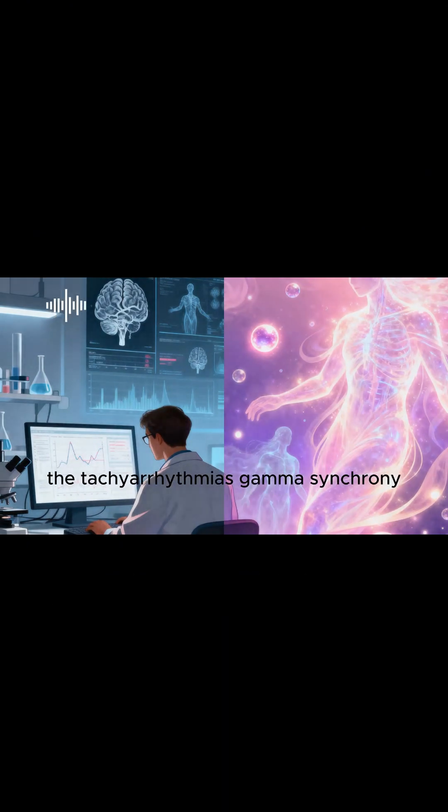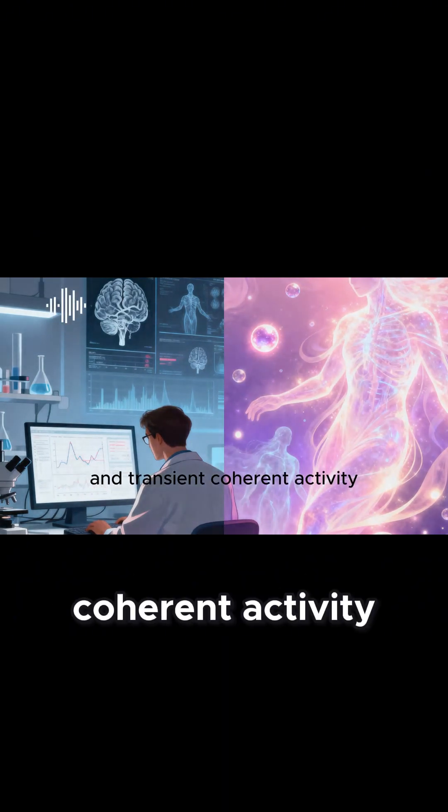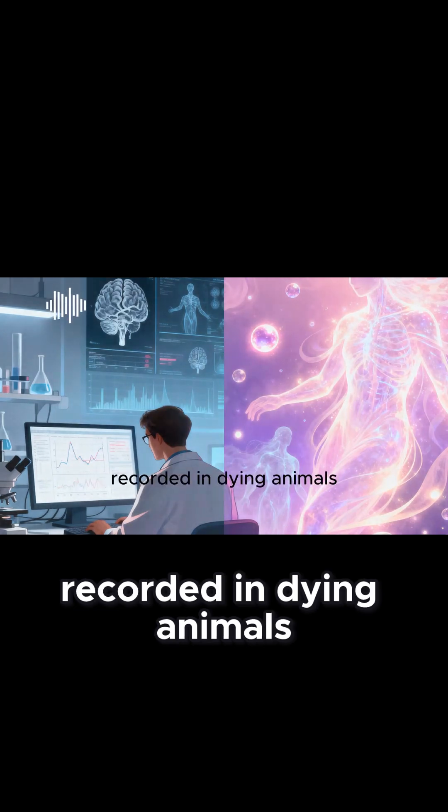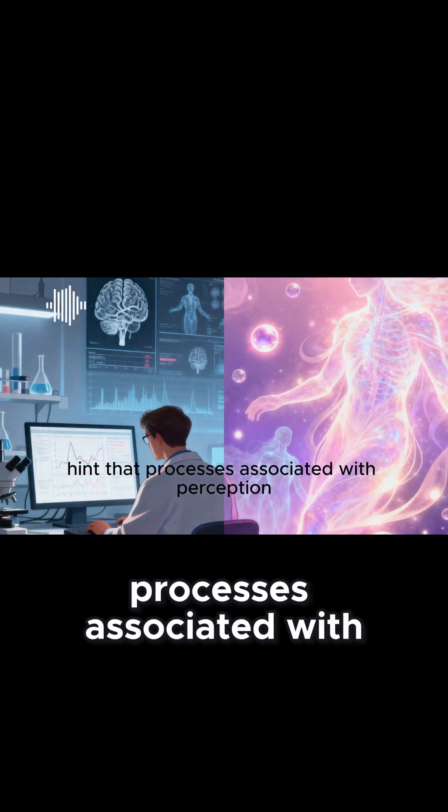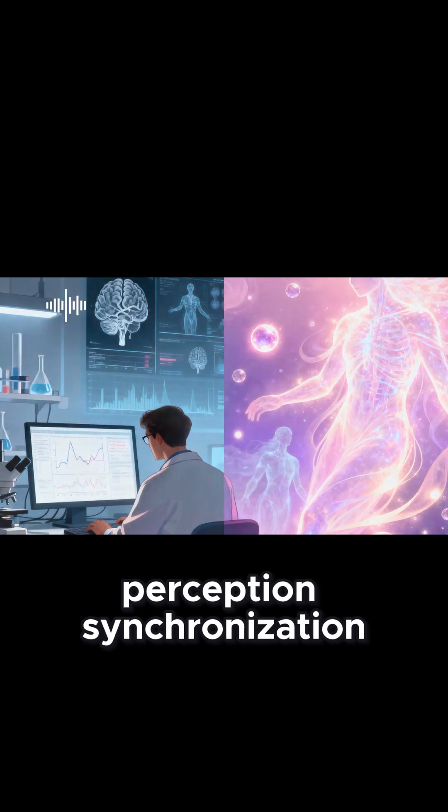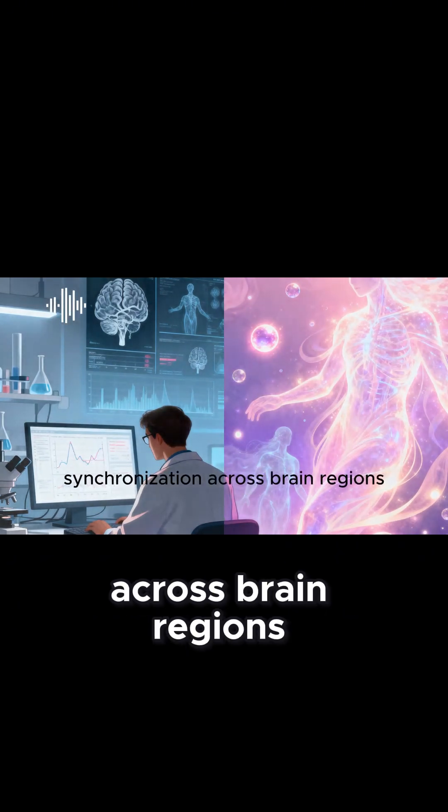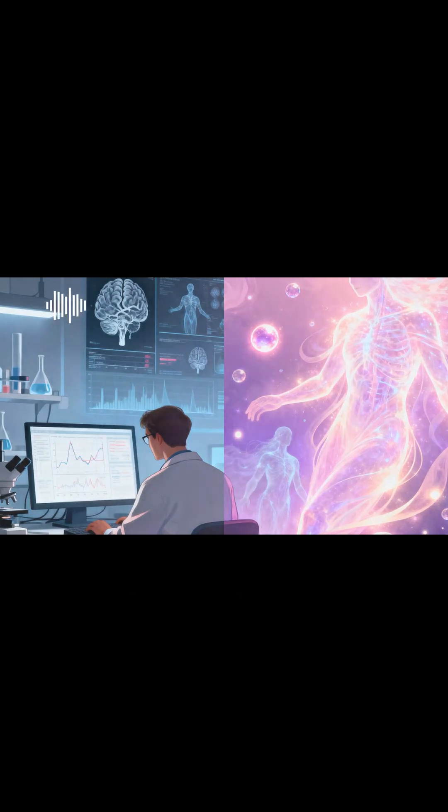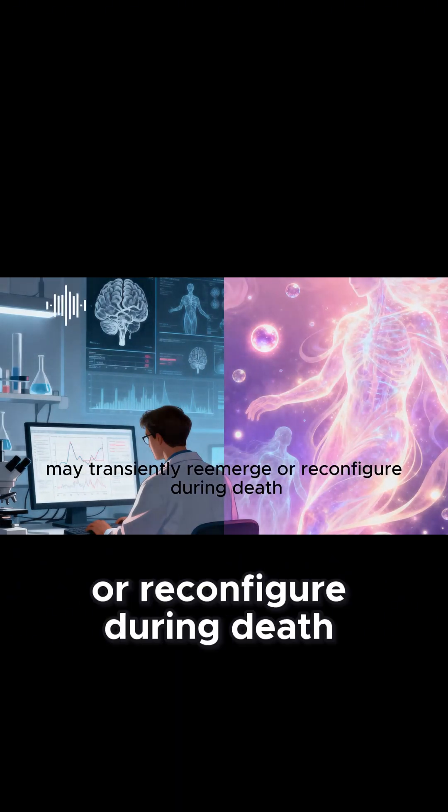The tachyarrhythmias, gamma synchrony, and transient coherent activity recorded in dying animals and some humans hint that processes associated with perception, synchronization across brain regions for instance, may transiently re-emerge or reconfigure during death.